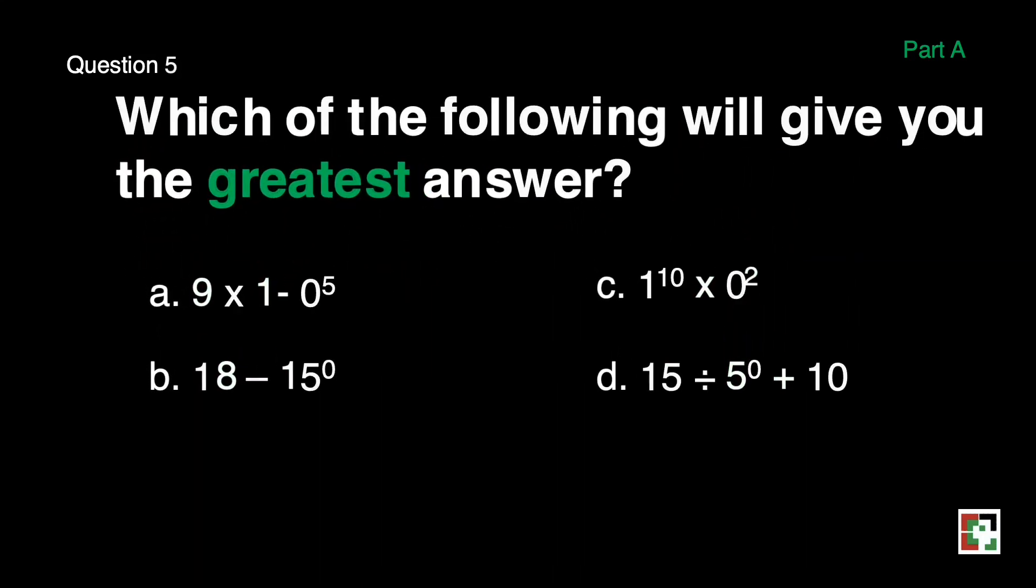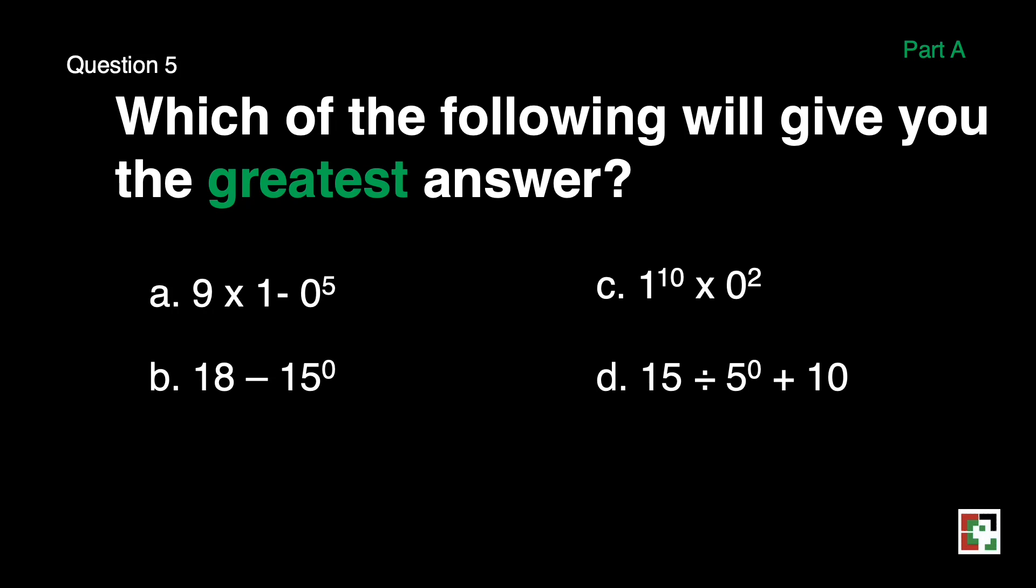Next question. Which of the following will give you the greatest answer? A, 9 times 1 minus 0 to the 5th power. B, 18 minus 15 to the 0th power. C, 1 to the 10th power times 0 to the 2nd power. And D, 15 divided by 5 to the 0th power plus 10.